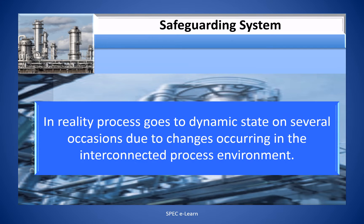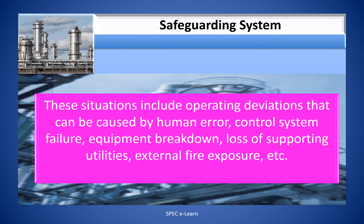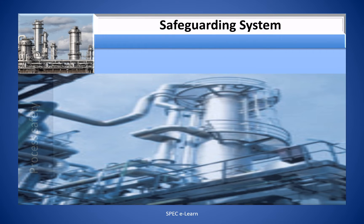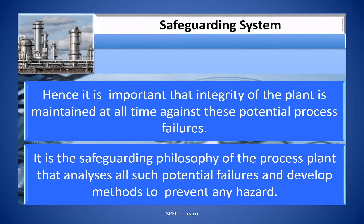In reality, the process goes to a dynamic state on several occasions due to changes occurring in the interconnected process environment. The operations of the plant have the potential to create situations which can cause equipment to exceed its design operating parameters and lose its integrity. These situations include operating deviations caused by human error, control system failure, equipment breakdown, loss of supporting utilities, external fire exposure, and more. Hence, it is important that the integrity of the plant is maintained at all times against these potential process failures. It is the safeguarding philosophy of the process plant to analyze all such potential failures and develop methods to prevent any hazard.